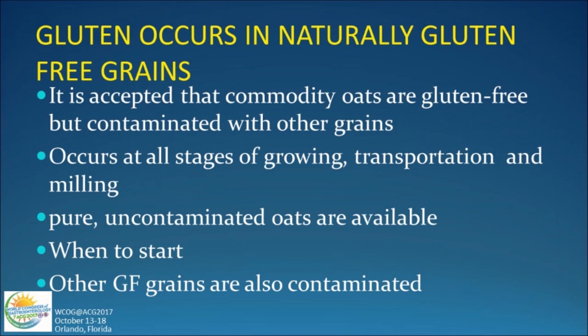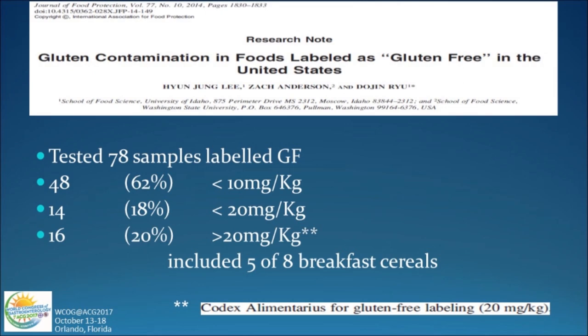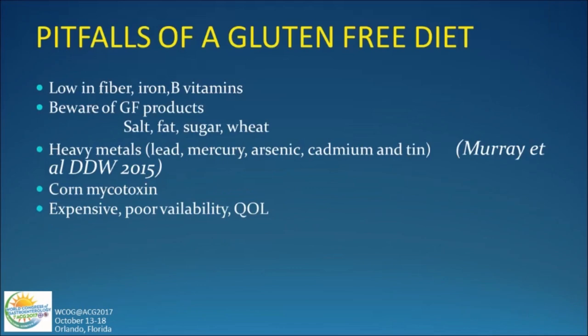Major companies producing oats, like Cheerios, developed a technique to optically sort oats, because oat grains are quite different to other grains, removing the non-gluten-containing grains. But if you look at food in the United States labelled gluten-free — assuming 20 milligrams per kilogram is the definition of gluten-free — 20% of these breakfast cereals that were labelled gluten-free actually had gluten above that level. So all this is evidence that patients are eating gluten.